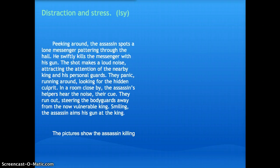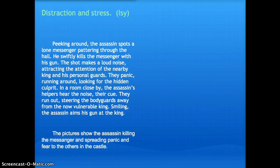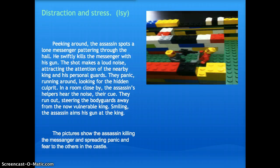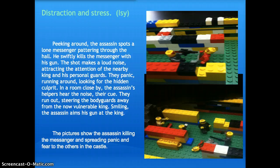Distraction and stress. Peeking around, the assassin spots a lone messenger, pattering through the hall. He swiftly kills the messenger with his gun. The shot makes a loud noise, attracting the attention of the nearby king and his personal guards. They panic, running around, looking for the hidden culprit. In a room close by, the assassin's helpers hear the noise. They're cute. They run out, steering the bodyguards away from the now-vulnerable king. Smiling, the assassin aims his gun at the king.